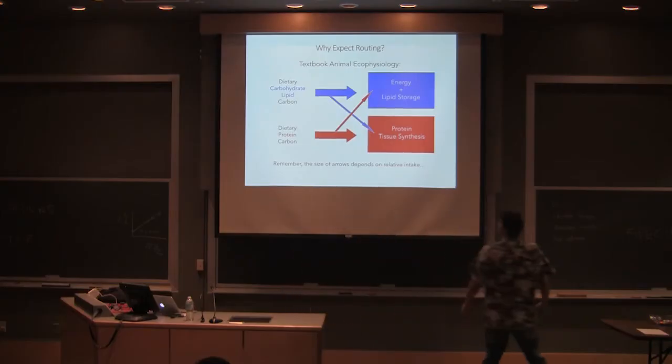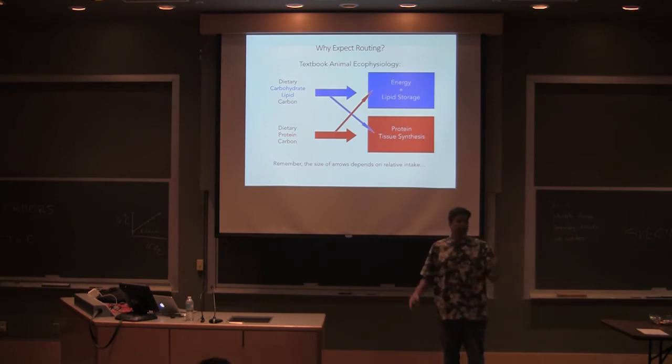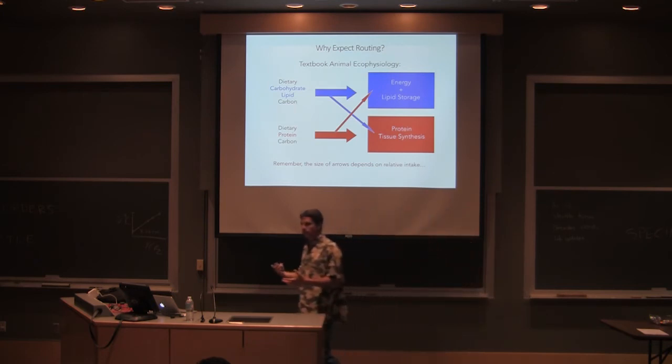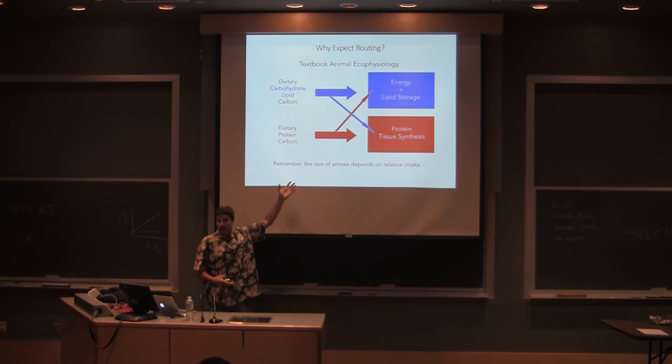But really, the size of these arrows and whether they're going that way or going straight in depends on what they have available to them, the quality of what they have available to them, and maybe some other factors like the need to reproduce, to make a fetus, to make babies, or to nurse those babies. So there's lots of other environmental demands on organisms that might change the size and direction of these arrows. Really important thing to keep in mind.